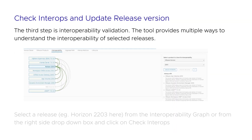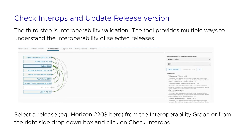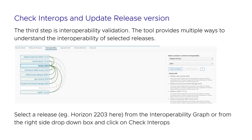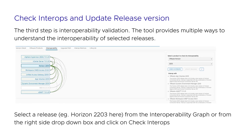Step 3.1: Check interops and update release version. Select a release — for example, Horizon 2203 — from the interoperability graph or from the right side drop-down box and click on Check Interops. This displays interoperability of multiple versions, for example Horizon other versions, on the selected item and interop products added. Clicking the comment icon displays footnotes for more details on compatibility. Select a version you would like to update and click Update Release; the window will update and display the updated interoperability graph and compatibility lists. For example, Horizon 2203 changed to 2206.